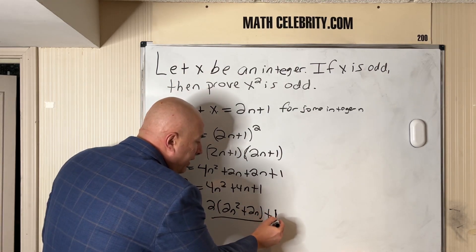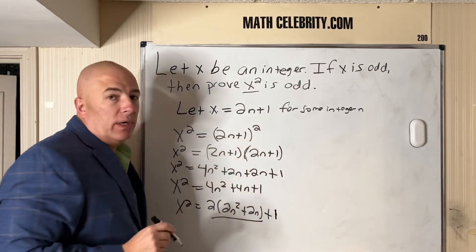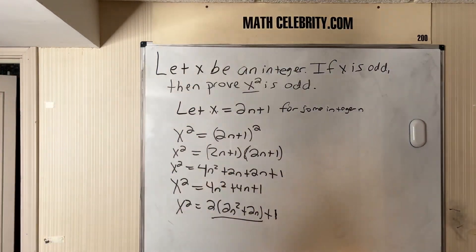Add the 1, it's always odd, which means we've proven x² is odd.